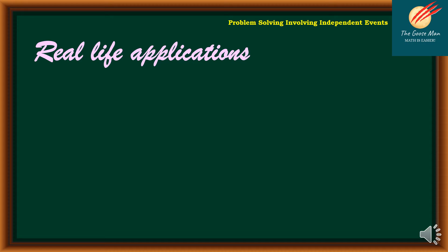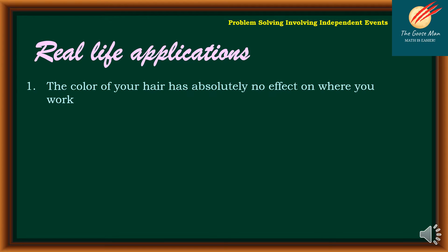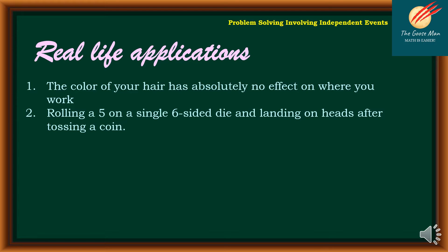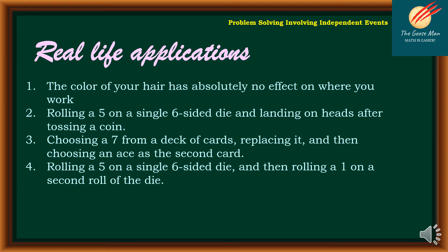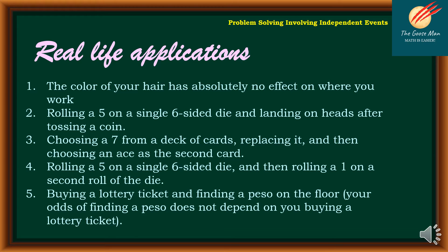Here are some real applications of independent events. Number one: the color of your hair has absolutely no effect on where you work. Number two: rolling a five on a single six-sided die and landing on heads after tossing a coin. Number three: choosing a seven from a deck of cards, replacing it, and then choosing an ace as the second card. Number four: rolling a five on a six-sided die and then rolling one on a second roll. Number five: buying a lottery ticket and finding a peso on the floor — your odds of finding a peso do not depend on buying a lottery ticket.